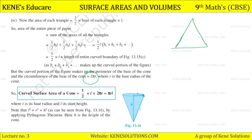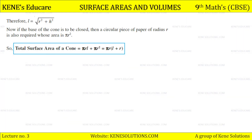Where R is the base radius and L is the slant height. Note that L² = R² + H² by applying Pythagoras theorem, where H is the height of the cone, therefore L = √(R² + H²). Now if the base of the cone is to be closed, then a circular piece of paper of radius R is also required, whose area is πR². So the total surface area = πRL + πR² = πR(L + R).